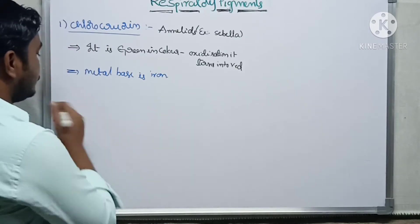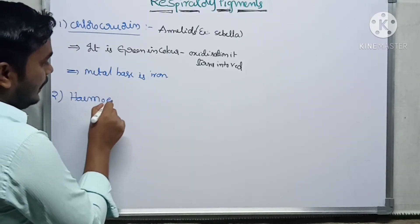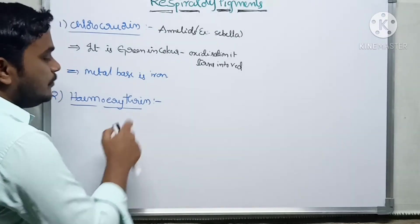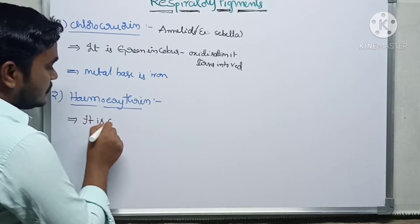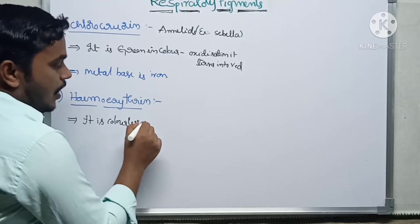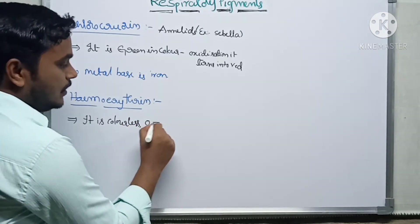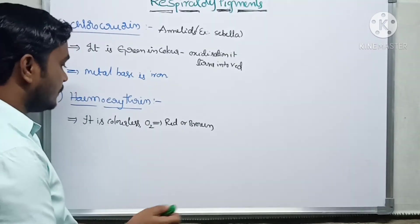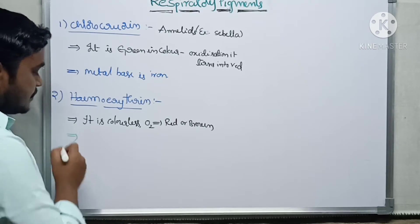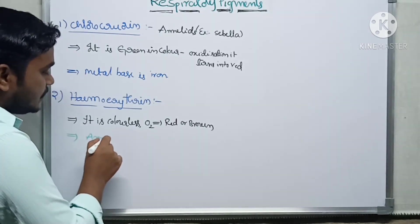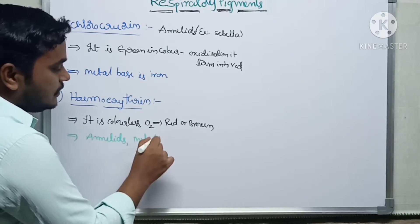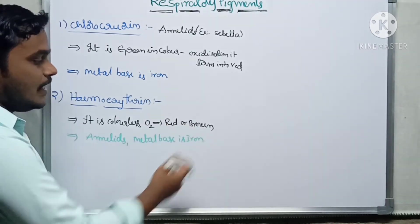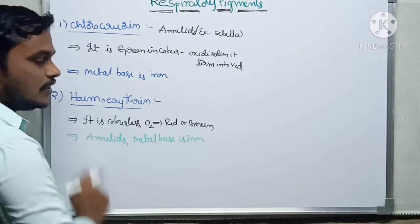The next respiratory pigment is hemo-erythrin. Hemo-erythrin is also present in annelids. The metal base is iron in this case also. It is colorless normally, but after oxidization it turns into red and brown color.